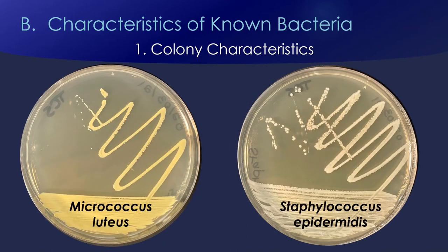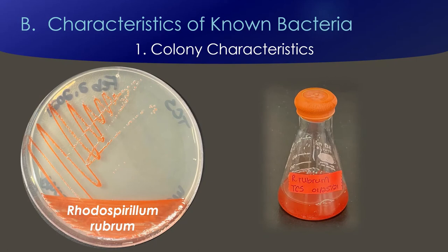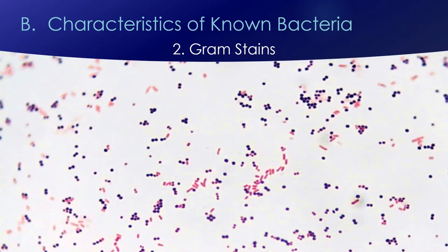Here are Micrococcus and Staphylococcus — you can see definite differences. Micrococcus tends to have very small colonies and is definitely much more yellow than Staphylococcus epidermidis, which is not quite white but one of the whiter colony types among our organisms. Here's our last species, Rhodospirillum — very different from the others, with a nice reddish color. This one is grown in a special anaerobic chamber, which gives it a couple of unique characteristics, but the red color is very distinctive.